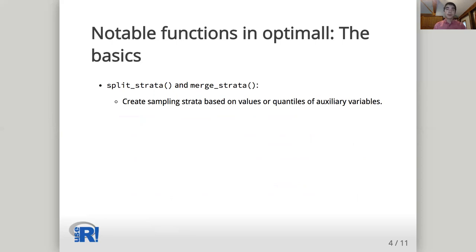First, we have split strata and merge strata, which can be used to define strata based on local within-stratum quantiles, global population-level quantiles, or specific values of continuous auxiliary variables. It can also be used to define strata based on levels of categorical variables.